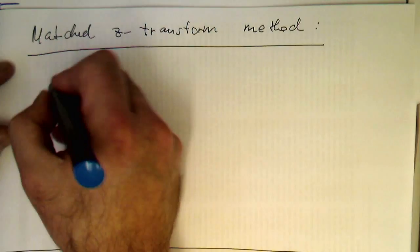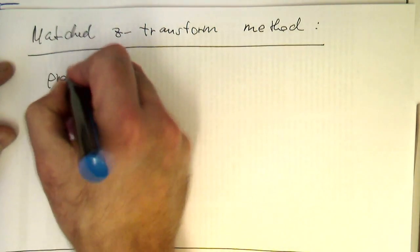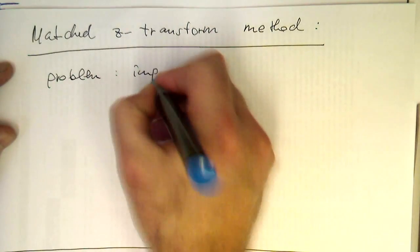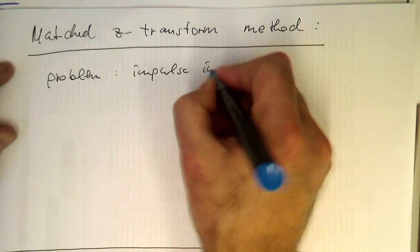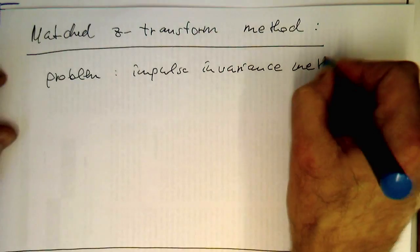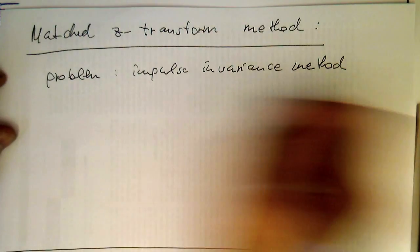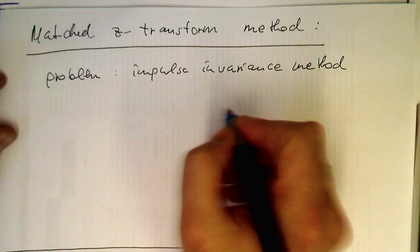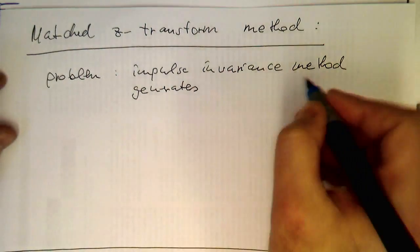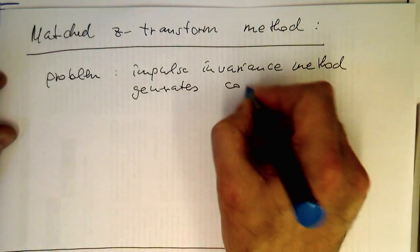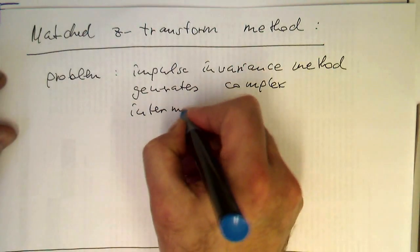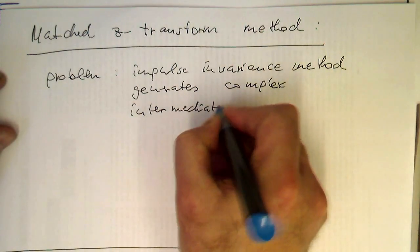Remember, the problem with the impulse invariance method was that it generates complex intermediate results.